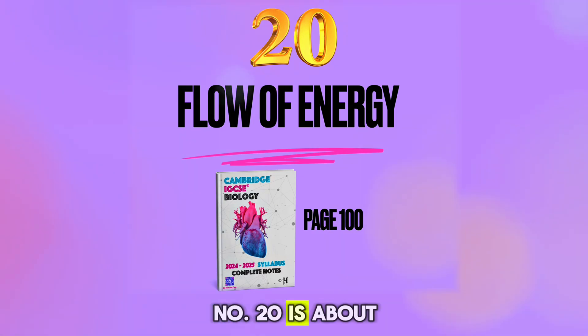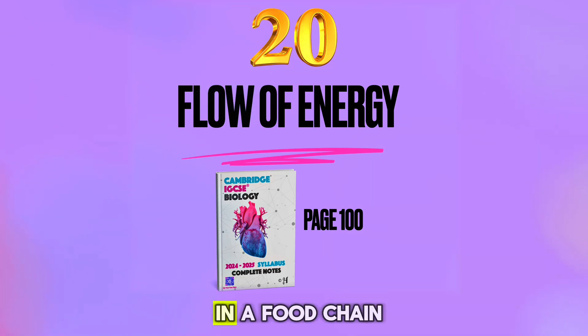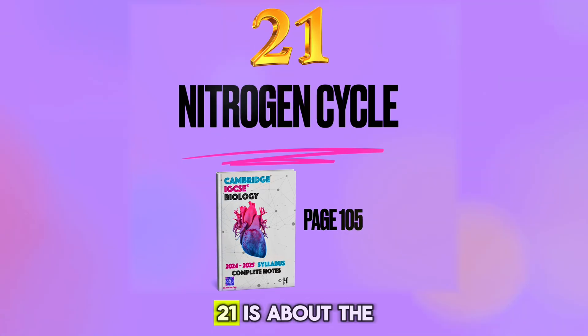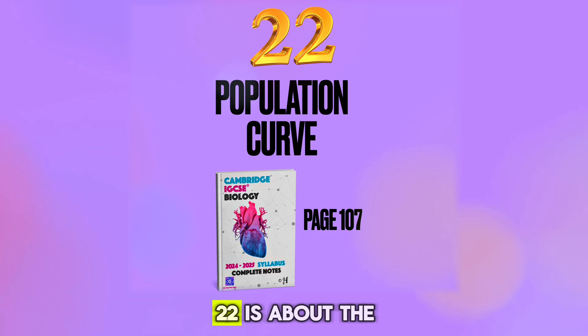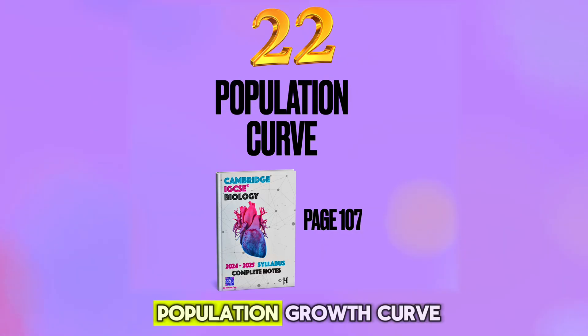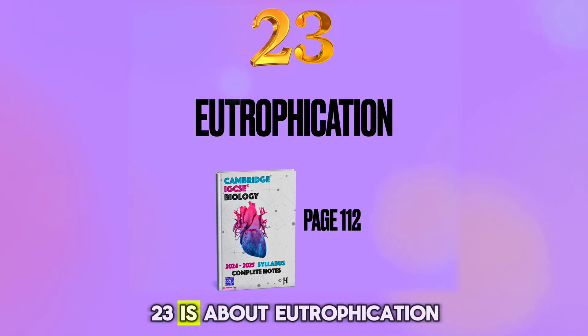Number 20 is about the flow of energy in a food chain. Number 21 is about the nitrogen cycle. Number 22 is about the population growth curve. Number 23 is about eutrophication.